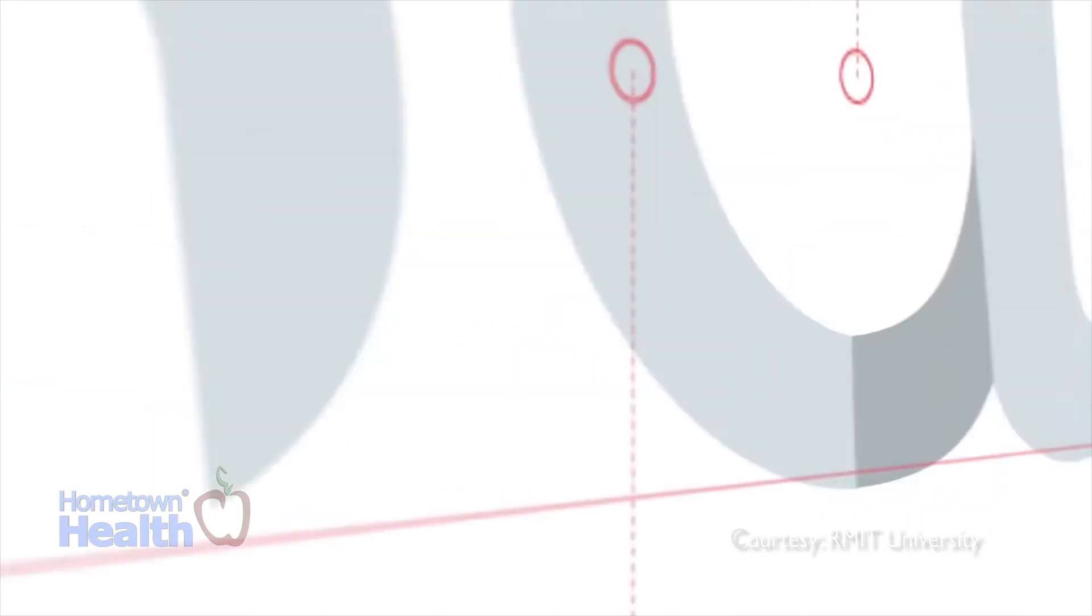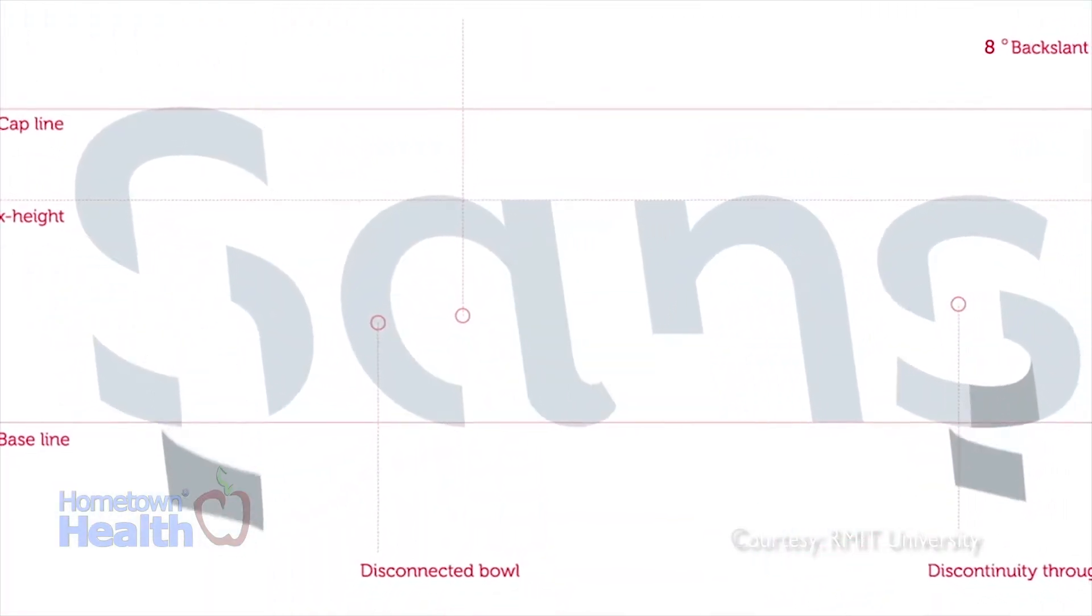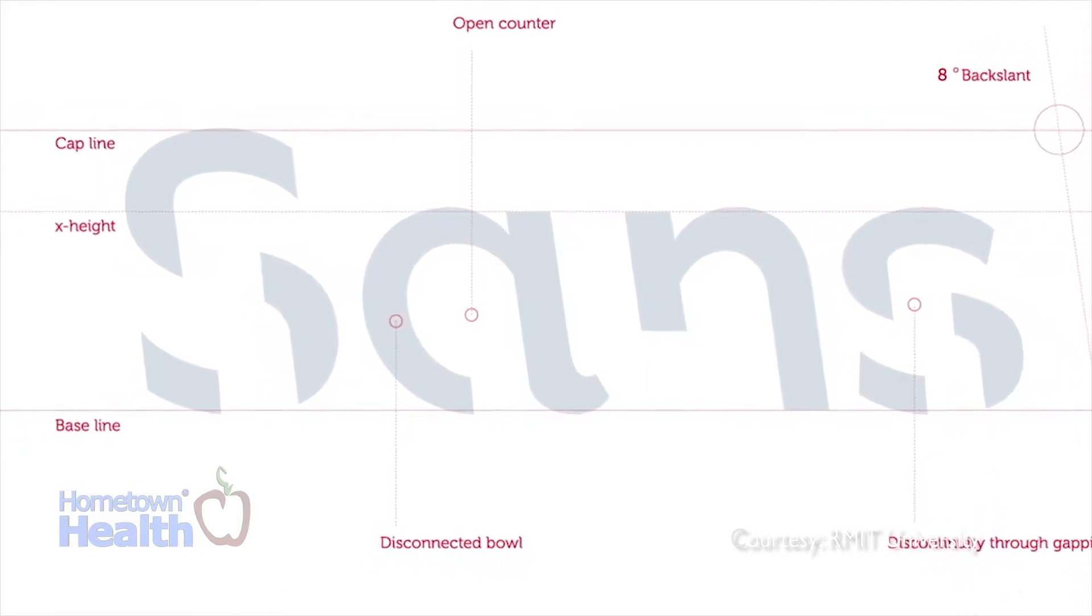These holes have a purpose though. They make Sans Forgetica harder to read, tricking your brain into using deeper cognitive processing and promoting better memory retention.